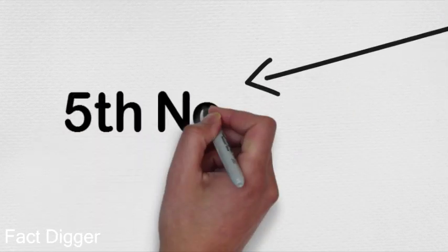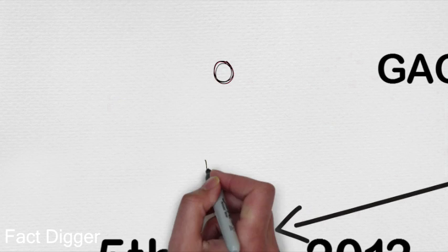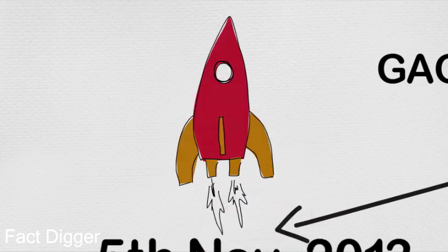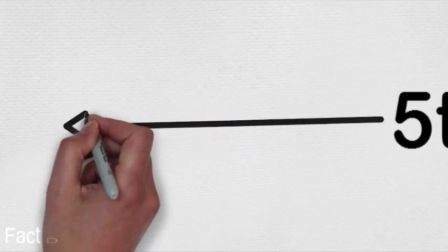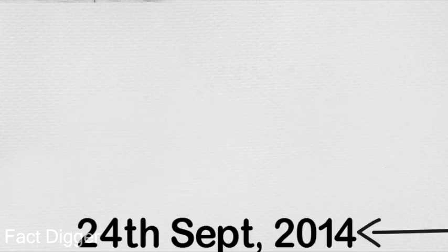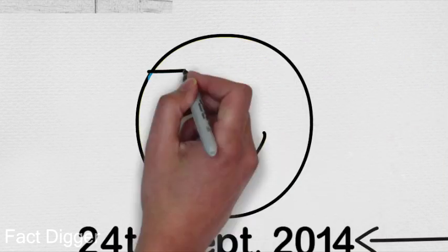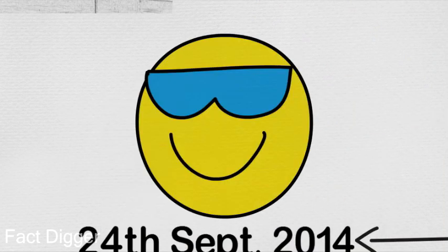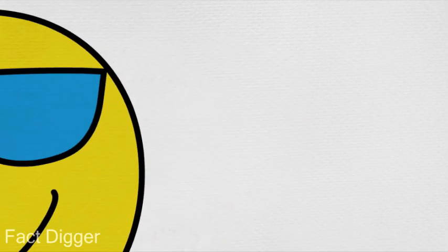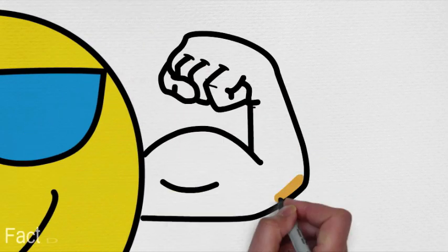On 5th November 2013, ISRO launched Mangalyaan successfully and completed India's first interplanetary mission. On 24th September 2014, Mangalyaan successfully entered the Mars orbit, and ISRO created history by reaching the Mars orbit in its very first attempt.